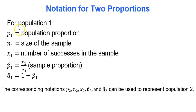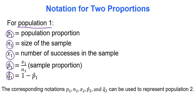For population one: p sub one represents the population proportion, n sub one is the sample size, x sub one is the number of successes, p-hat sub one is the sample proportion, and q-hat sub one is one minus p-hat sub one. The subscript two represents the corresponding information for population two. These subscripts are key for organizing your data.